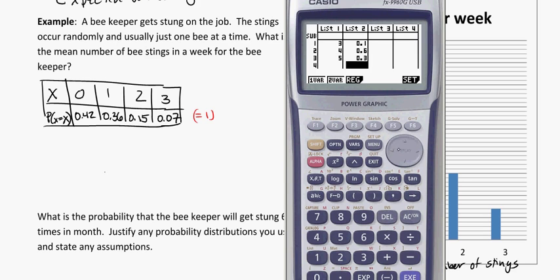If I exit back to my list, I need to put in the outcomes in the first column. So 0, 1, 2, and 3. And here, my probabilities: 0.42, 0.36, 0.15, 0.07.